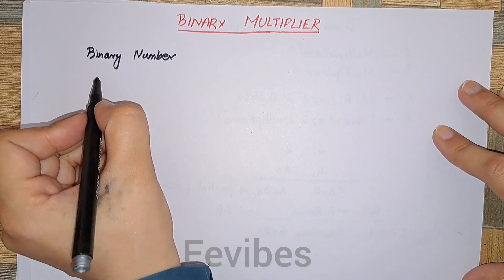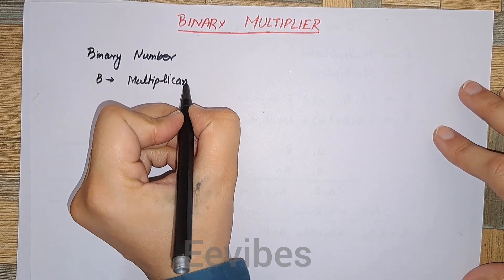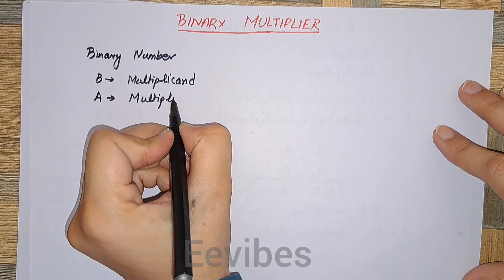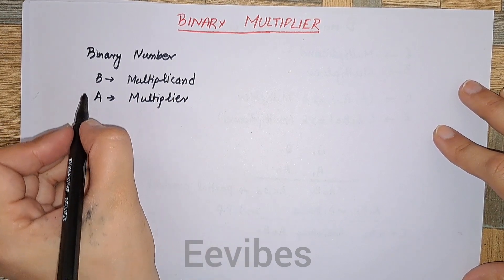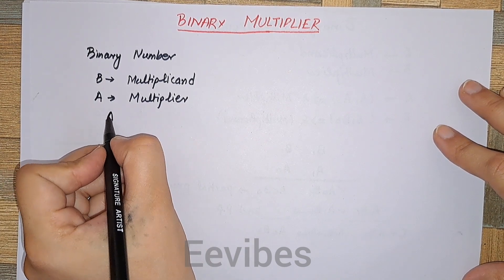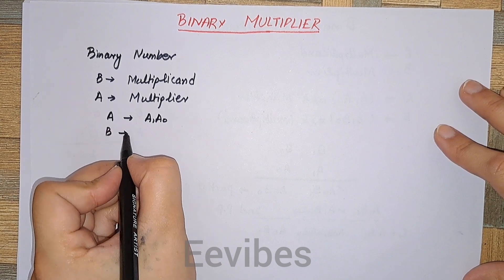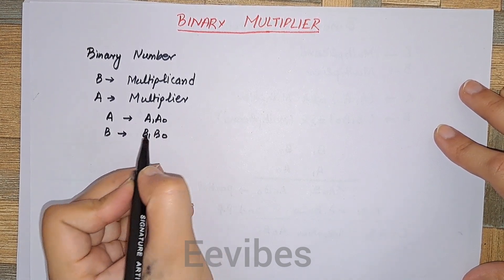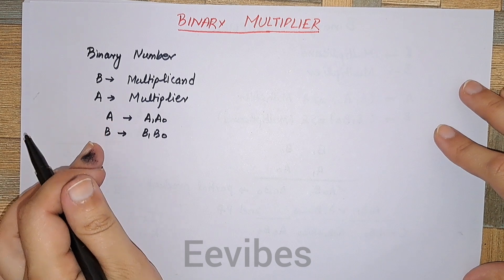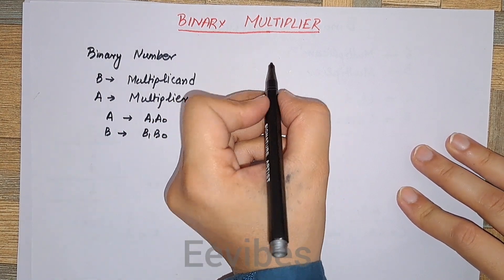In binary multiplication we have the multiplicand — let's call it B — and we have another number which we name as the multiplier, let's call it A. Assuming that both A and B are of two bits, A can be represented by bits a1 and a0, and B can be represented by bits b1 and b0. Once we multiply A and B, we take the same approach as we do for the multiplication of decimal numbers.